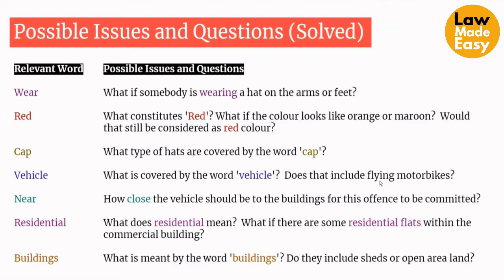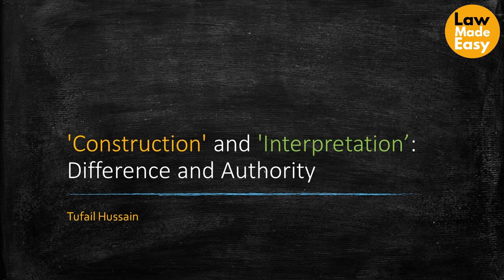Looking at the possible issues: the word 'wear' — what if somebody is wearing a hat on their arms or feet? 'Red' — what constitutes red? What if the colour looks like orange or maroon? 'Cap' — what types of hats are covered by the word cap? Similarly, the words 'vehicle,' 'near,' 'residential,' and 'buildings' can give rise to far more questions than answers. So these are the issues you might face when interpreting laws. Let's move on to our next lesson.